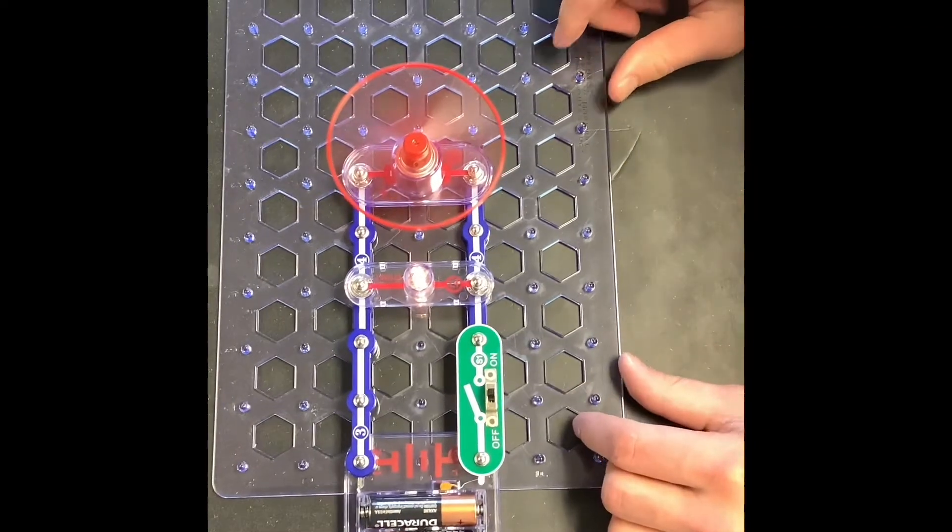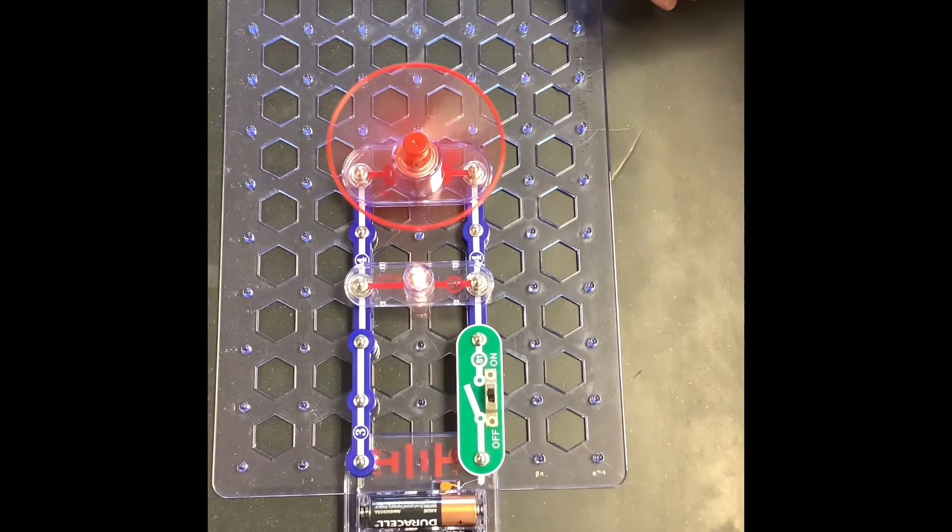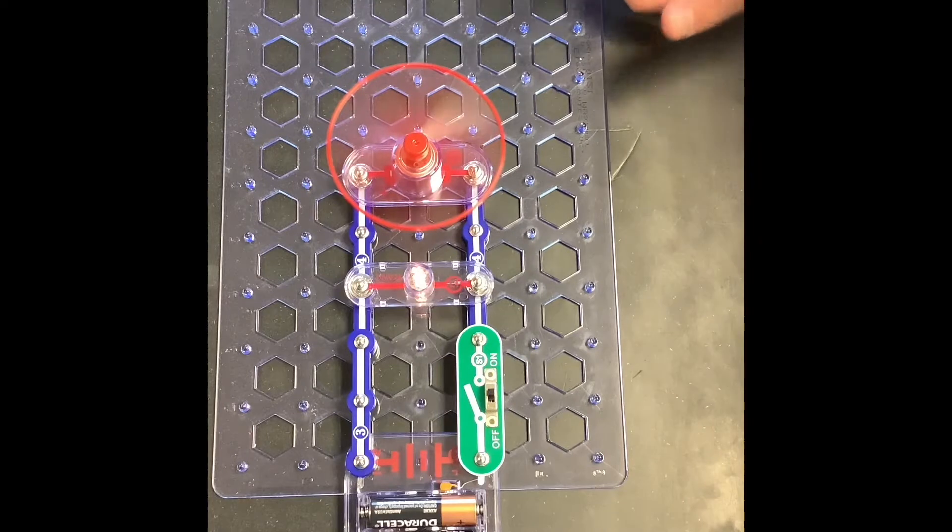So if you can tell, the lamp this time is running a lot brighter than it did when it was just in series. And the motor is also turning a lot faster.